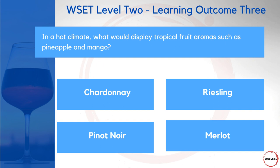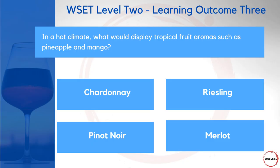Moving on to another example: in a hot climate, what would display tropical fruit aromas such as pineapple or mango? Would it be Chardonnay, Riesling, Pinot Noir, or Merlot? Again, you can discount the red wine options immediately since pineapple and mango are white wine aromas. Then it comes down to Chardonnay versus Riesling — in a hot climate, it's Chardonnay that displays tropical-type aromas.